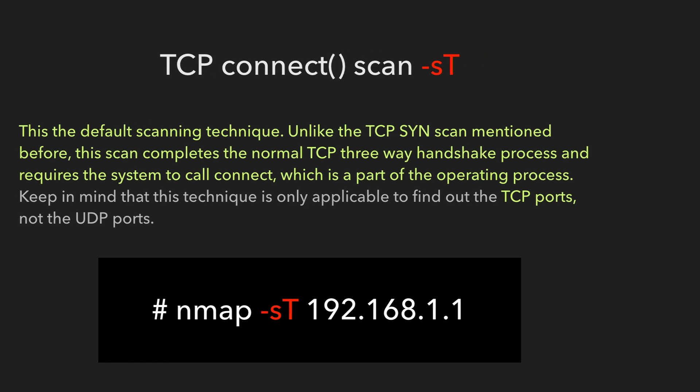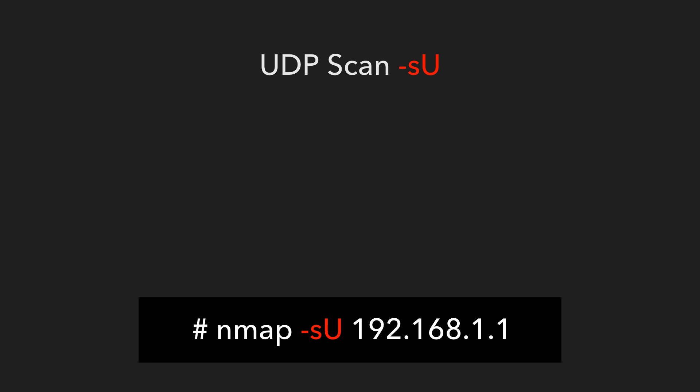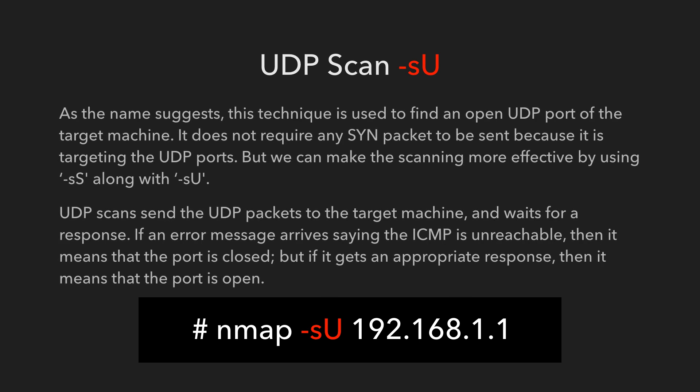UDP Scan: as the name suggests, this technique is used to find open UDP ports on the target machine. It does not require any SYN packet to be sent because it is targeting UDP ports. We can make the scanning more effective by using the -sS flag along with -sU. The UDP scan sends UDP packets to the target machine and waits for a response. If an ICMP unreachable error message arrives, the port is closed. If it gets an appropriate response, the port is open.